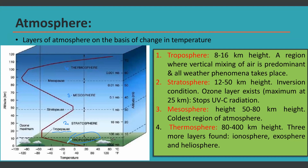Then we have the stratosphere, which goes up to about 50 kilometers height. The boundary between the stratosphere and mesosphere, where the stratosphere is ending, is called the stratopause. Where the mesosphere ends, that is called the mesopause. So pauses are the ending boundaries of each particular layer.